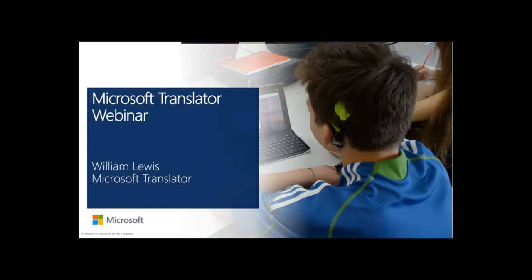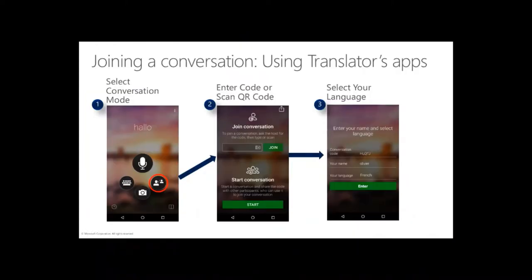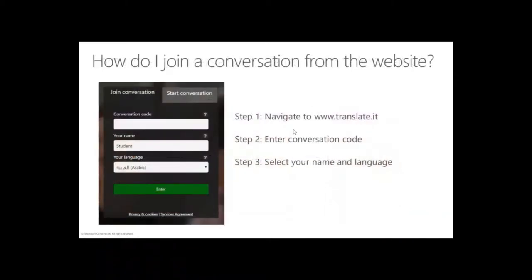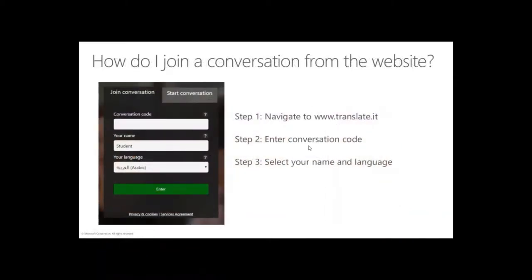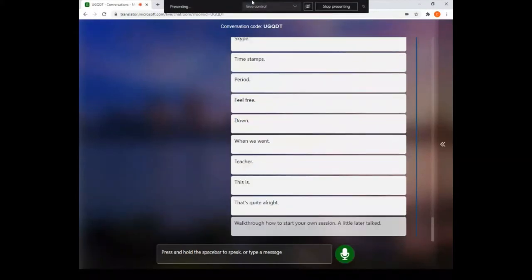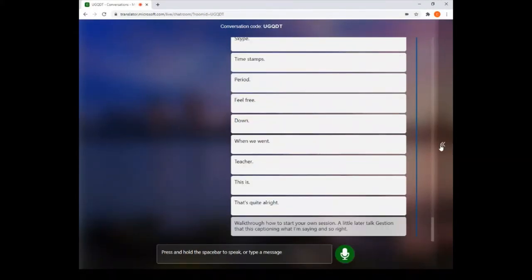When I'm giving a talk I like to jump right in and start using the technology. The next slide shows you how to join the session. You can join using the Microsoft Translator app on your device, or you can join using a browser by going to the website. I've started a session that's captioning what I'm saying, so you'll see the captions showing up on the screen right now.